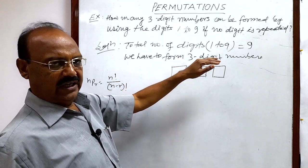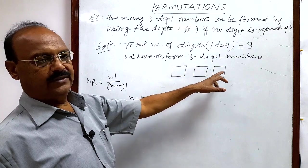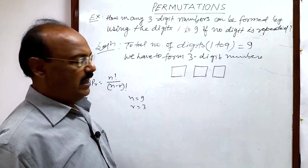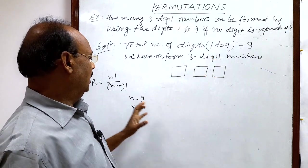We have to pick up three digits at a time, so r equals 3. We have to arrange these three digits, which can be done in 9P3 ways.